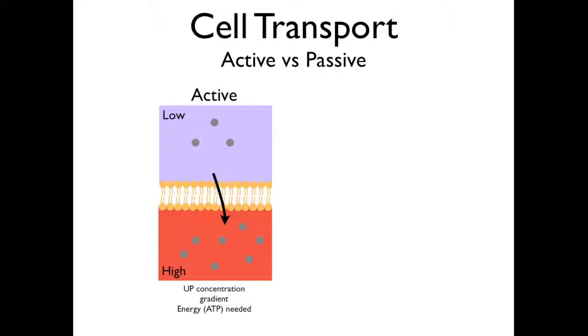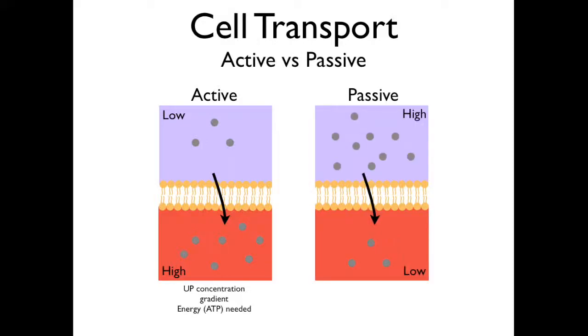Passive transport is the movement of particles from areas of high concentration to low concentration, or down the concentration gradient. Passive transport does not require energy.